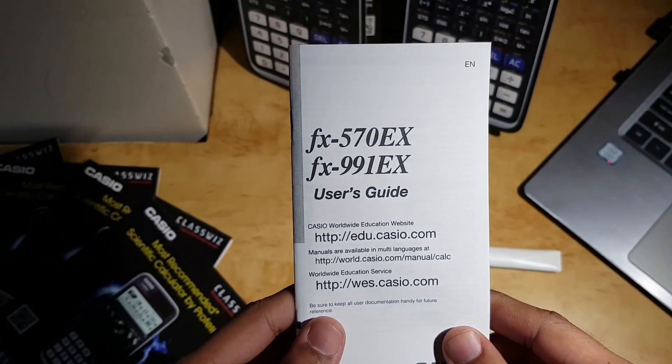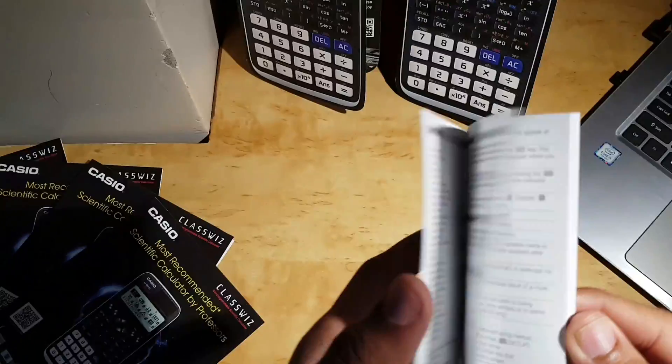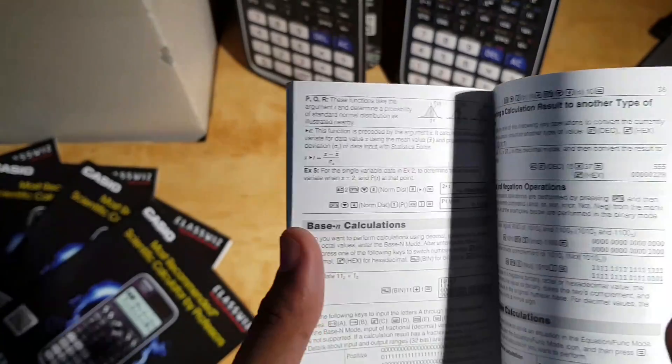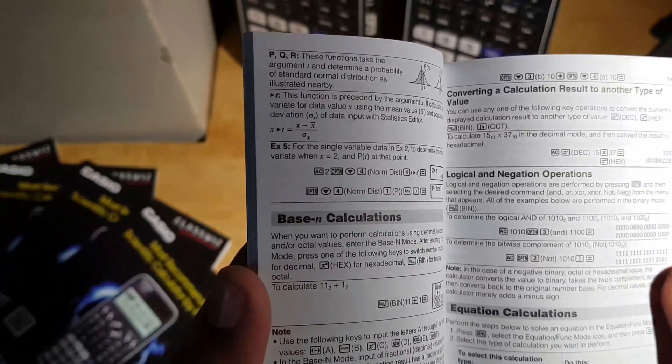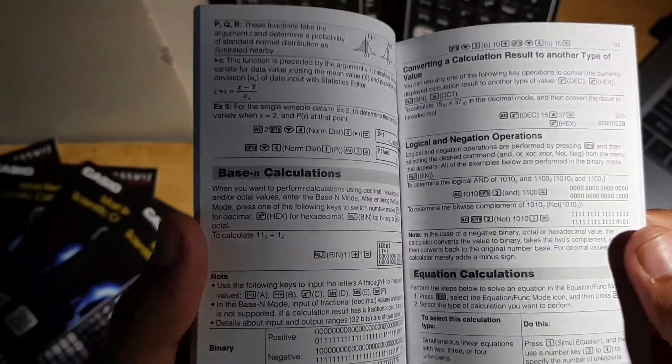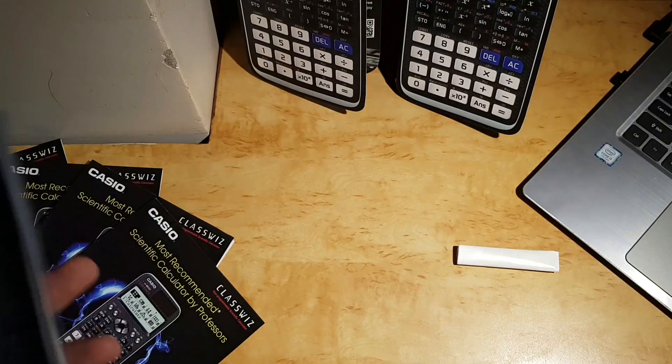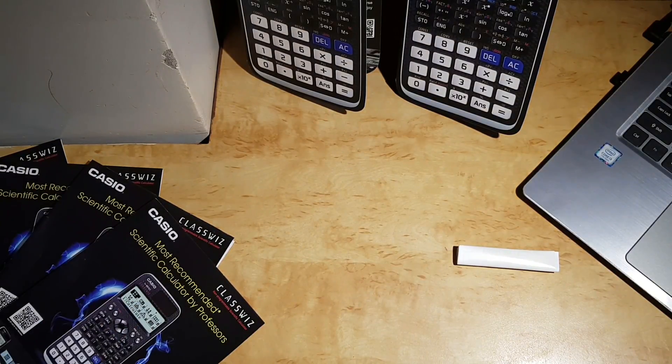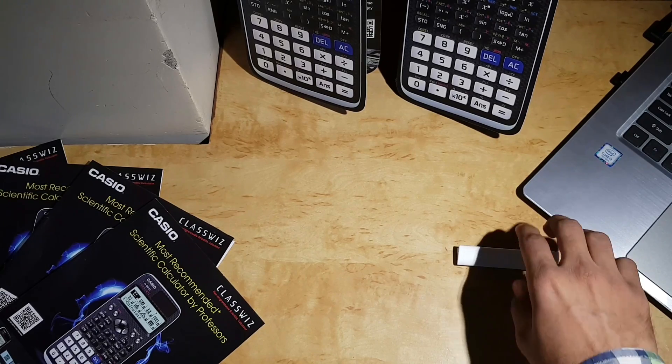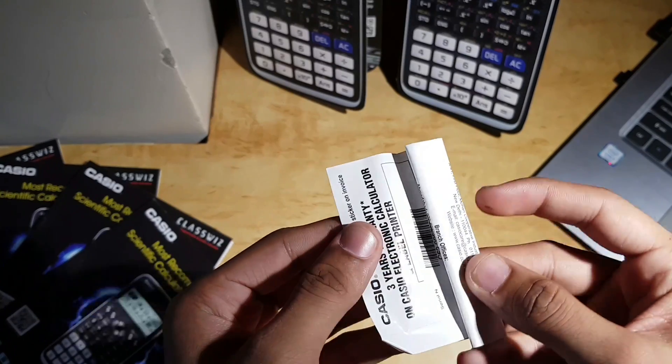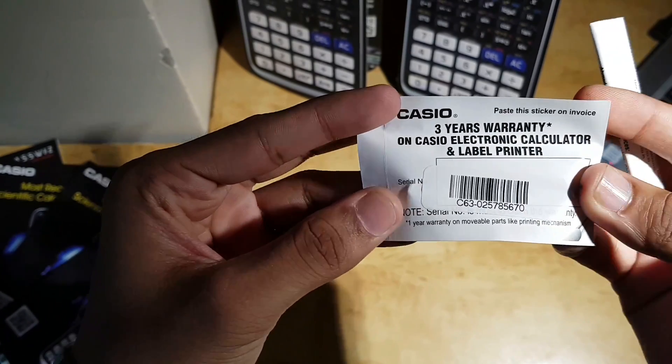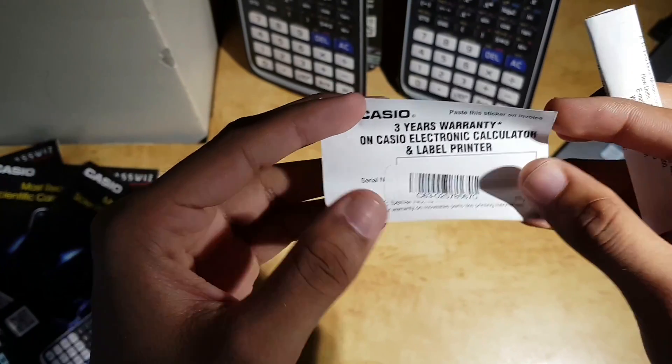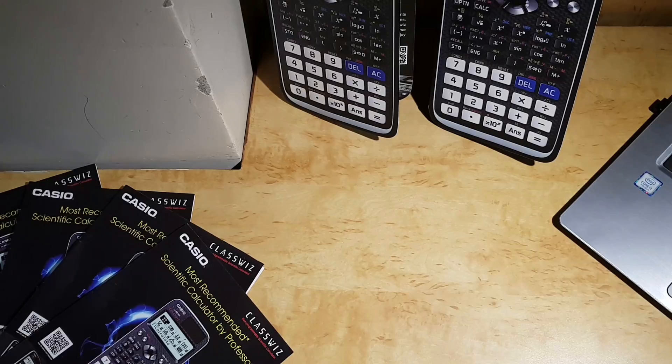Starting with the English guide. We get this booklet-type guide that has all the basic functions. If you want to learn that, get this calculator. It's really useful. And then we have this three-year warranty label. I'm going to keep that aside.